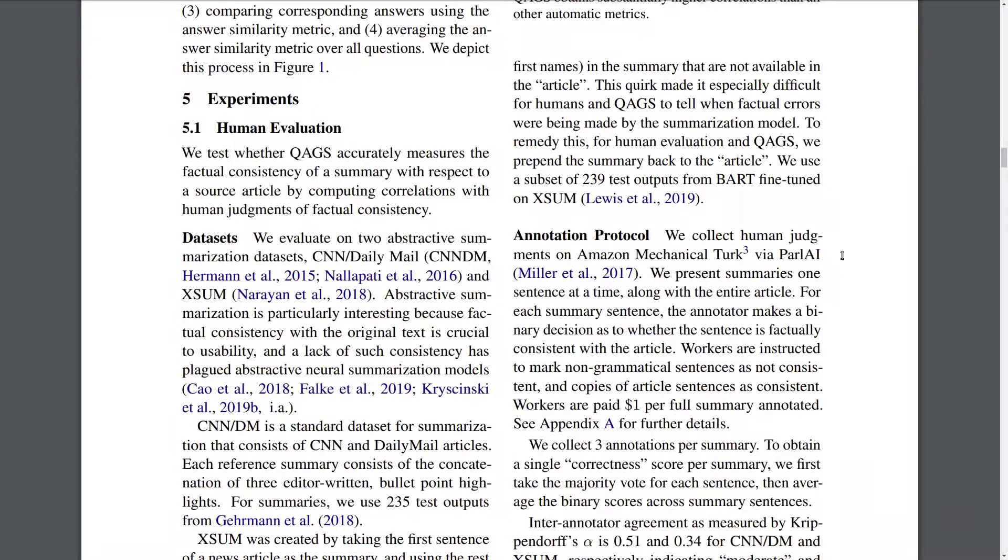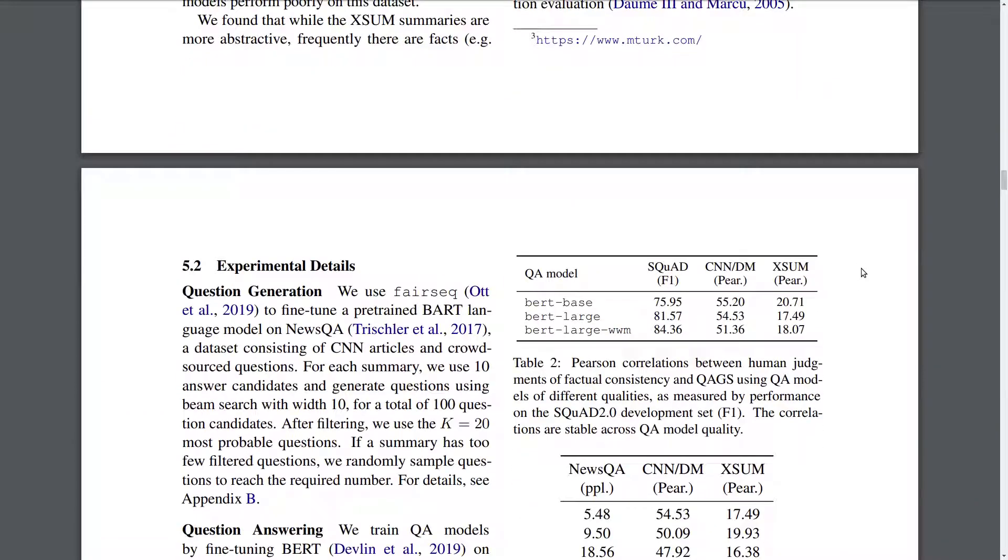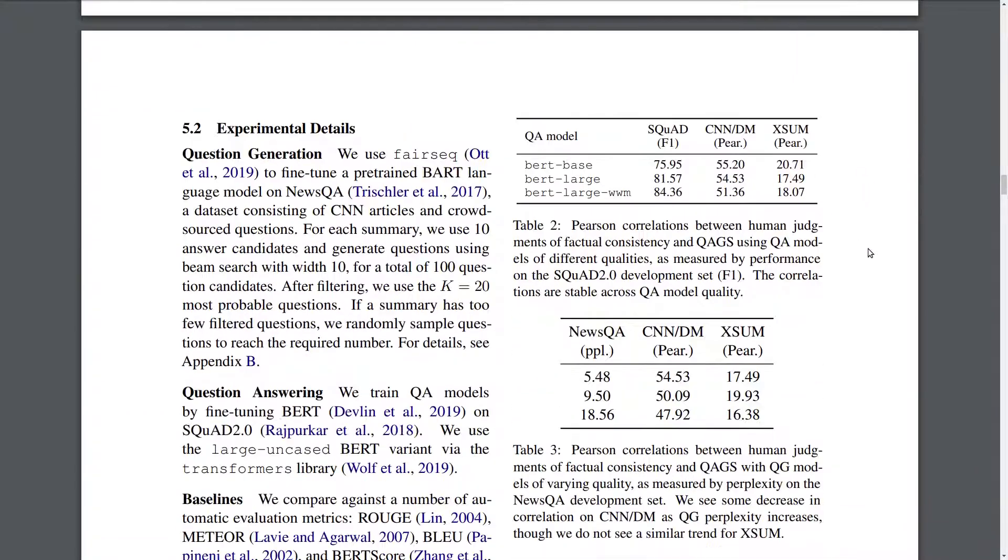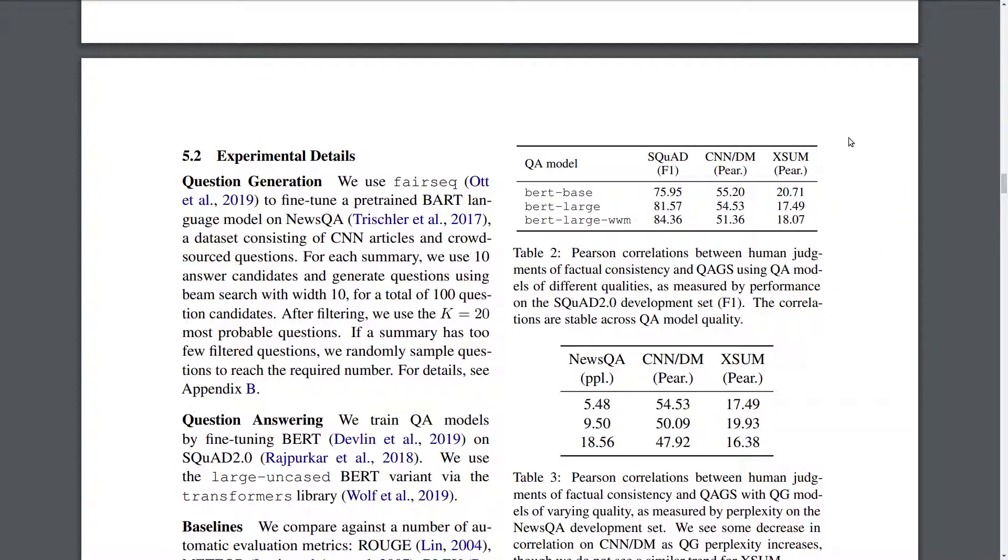Furthermore, they do some interesting ablation-type experiments to test because one obvious concern that comes with this QAGS approach is: what if your question answering or question generation models are not very good? Will this still work? It seems that even if you're using a low-quality question answering model, you'll still be able to get a good Pearson correlation between human judgments and QAGS outputs.